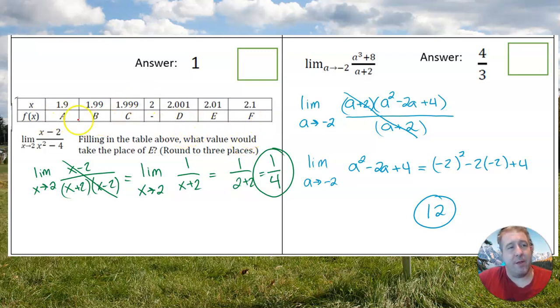Alright, so for this question, when I look at this table, what I'm noticing is that these numbers are getting closer and closer to, so these numbers are below 2, and these numbers are above 2. And then, for both ways, they are getting closer and closer to 2. Now, the point is, what is this value right here? They didn't give us any of these answers. They just said A, B, C, D, E, F. We're supposed to find out what goes in this dash right here. Filling in the table above, what value would take the place of E? Well, basically, these numbers are all going to be pretty much exactly the same thing, because they should be getting closer and closer and closer to some sort of number. So we're trying to find that number in between. We're trying to find the limit as x equals 2.